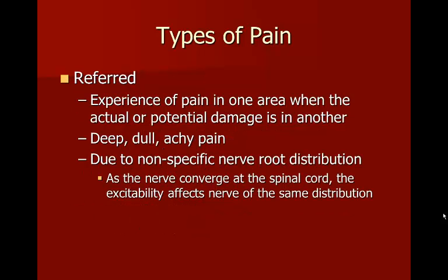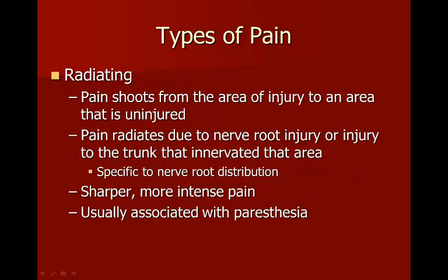Referred pain is the experience of pain in one area when the actual or potential tissue damage is in another. It's usually a deep, dull, and achy pain due to nonspecific nerve root distribution — when nerves converge at the spinal cord, excitability affects nerves at the same distribution. For example, the radiating pain down the jaw or left side seen in signs of a heart attack. Radiating pain, by contrast, shoots from an area of injury along the nerve root distribution — for instance, an L5 lower back injury causing pain shooting down the leg. It's usually sharper, more intense, and associated with paresthesia or decreased movement.